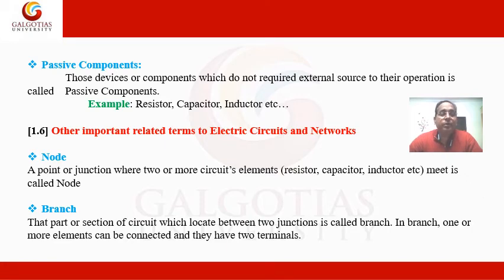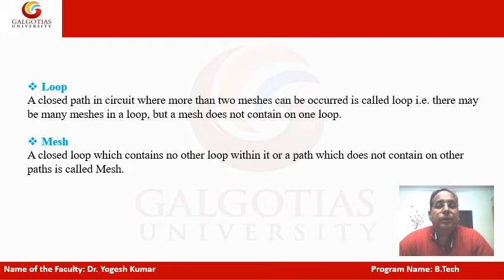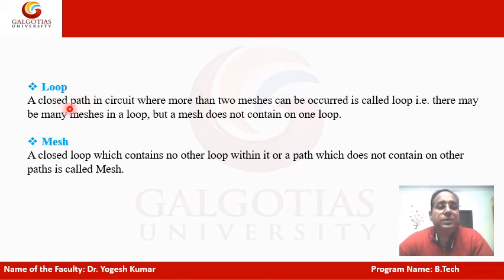Now let's look at the concepts of node, branch, loop, and mesh in a network. A node is a point or junction where two or more elements are attached together. A branch is the path between two junctions. A loop is a closed path in a circuit — when more than two meshes can be formed it is called a loop. A mesh is a closed loop that contains no other loop inside it.